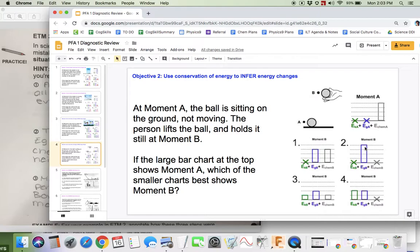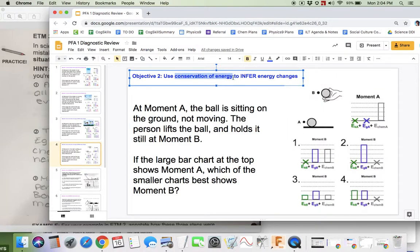But this one has 1, 2, 3, 4. That would mean chemical energy went down 4, gravitational went up 4. So as the person lifts the ball, chemical energy transfers to gravitational energy. I know that answer choice 2 is correct because the total number of boxes is equal in both, and I used conservation of energy to infer those changes.